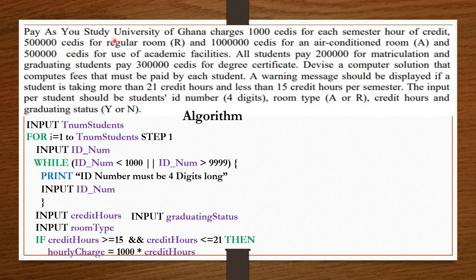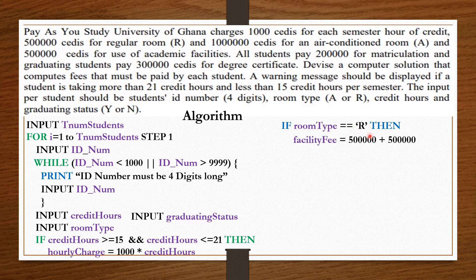Continuing with the question: 500,000 cedis for a regular room, 1 million cedis for an air-conditioned room, and 500,000 cedis for use of academic facilities. Meaning, regardless of your room type, you will still pay for the use of academic facilities. So if room type is regular, then the facility fee equals the regular fee plus the academic facility fee. Else, if the room is air-conditioned, then the facility fee equals the air-conditioned room fee plus the academic facility fee.